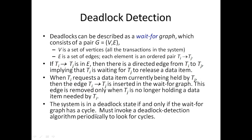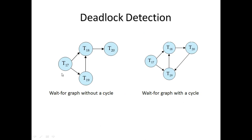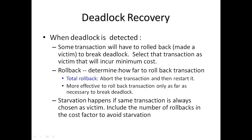The system is in a deadlock state if and only if the wait-for graph has a cycle. A cycle is the necessary condition for a deadlock to occur. If there is no cycle, no deadlock has happened. A deadlock detection algorithm must periodically look for cycles. Two examples are shown: in one, transactions T17, T18, T19 have no cycle — so no deadlock. In the other, transactions T18, T19, T20 form a cycle — indicating a deadlock state.